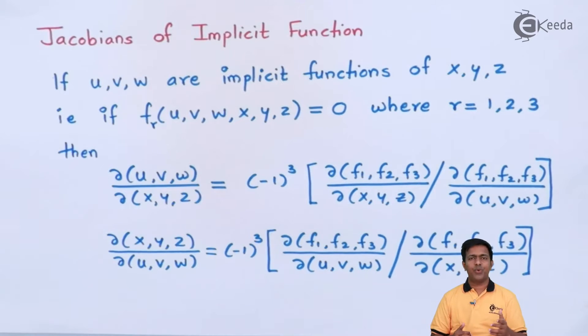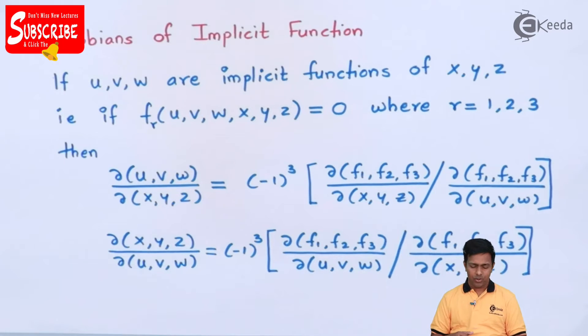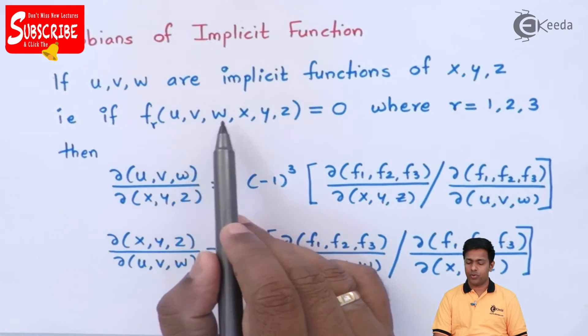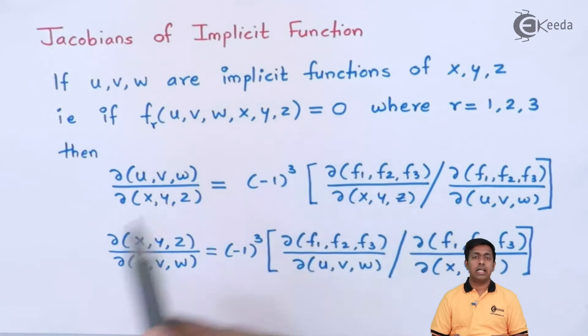So if u, v, and w are the implicit function of x, y, and z, now what does it mean? We know that if a function of u, v, w, x, y, z is equal to 0, then such function is called as implicit function.